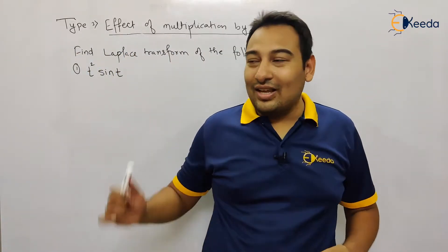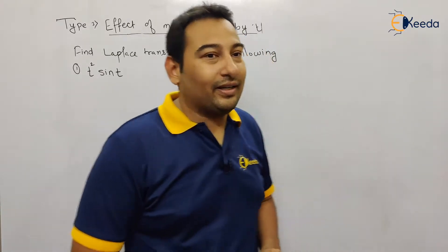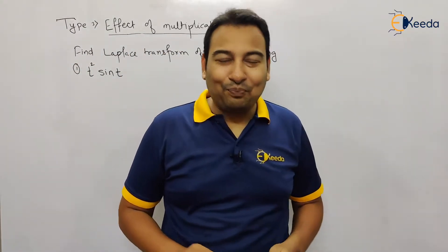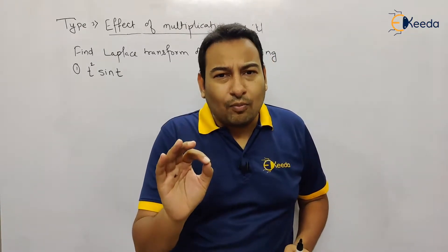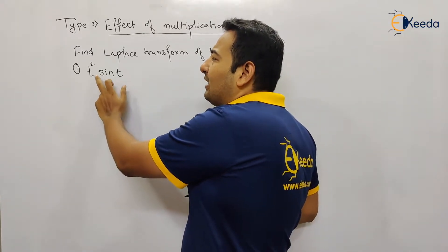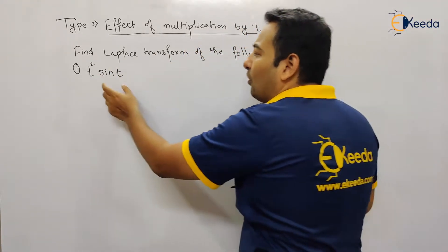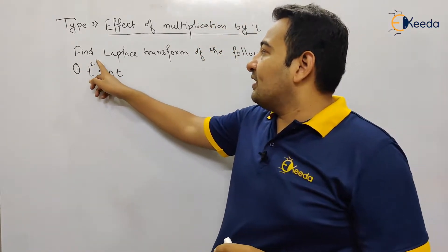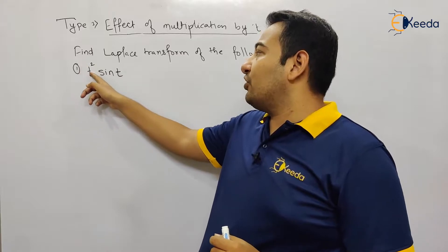In the last video we discussed what is effect of multiplication by t, or what the property says. Now we're going to implement it. The trick is: forget about the property — whatever property is given in the problem, forget about it. See here, this is your function sin(t) and it is multiplied with t squared, so this indicates effect of multiplication by t. Forget about this t squared.